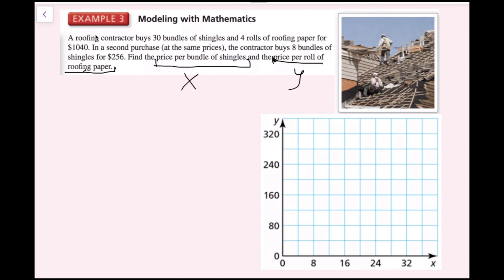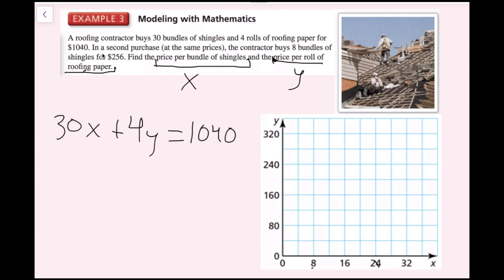Now I'll set up two equations to graph. From the first purchase: 30 bundles times the price per bundle (x) plus 4 rolls times the price per roll (y) equals $1,040, giving us 30x plus 4y equals 1,040. For the second purchase, 8 bundles of shingles times the price per bundle (x) equals $256, giving us 8x equals 256.